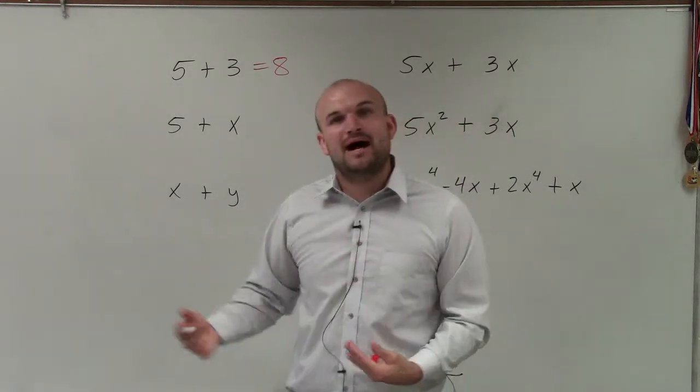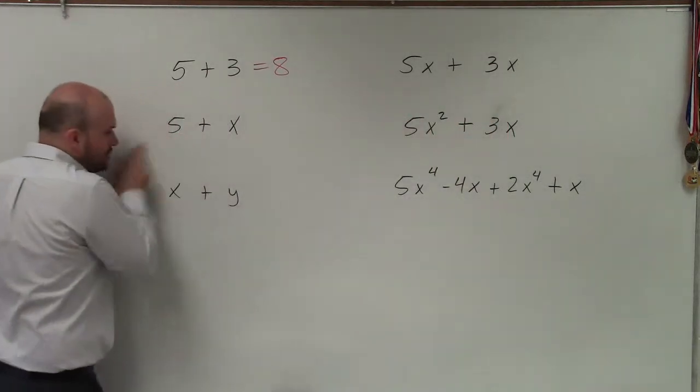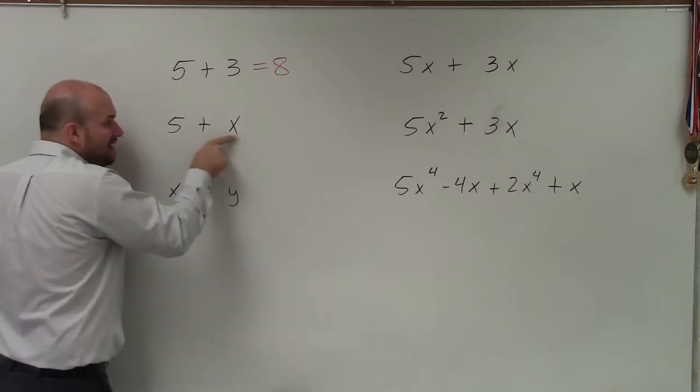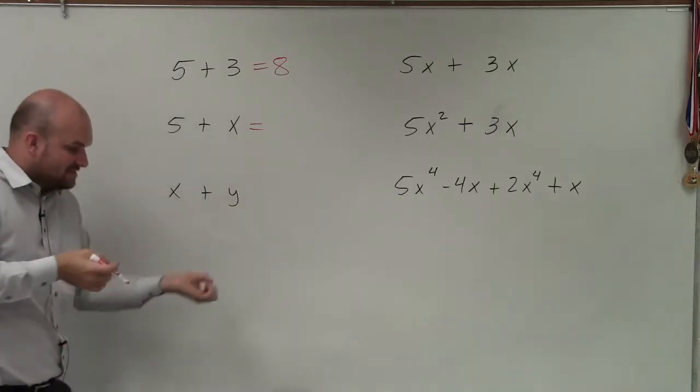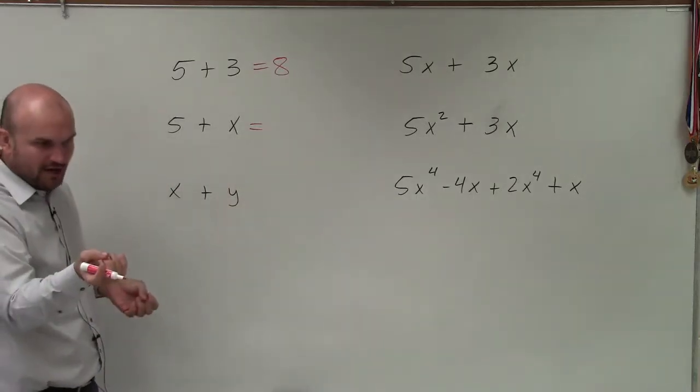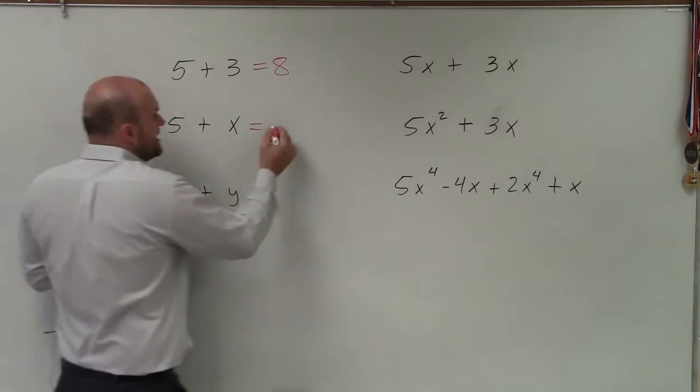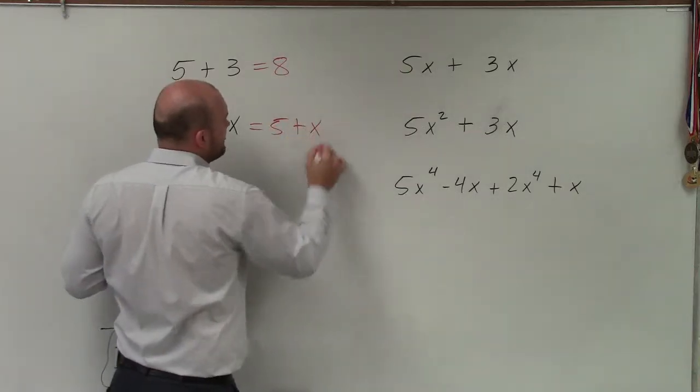So therefore, I cannot combine these because here, I have no variable factor. Here, I have one variable factor of x. But they don't have the same, right? One has no variables. One has one variable to the first power. So therefore, I can't combine them. So I just leave them as 5 plus x.